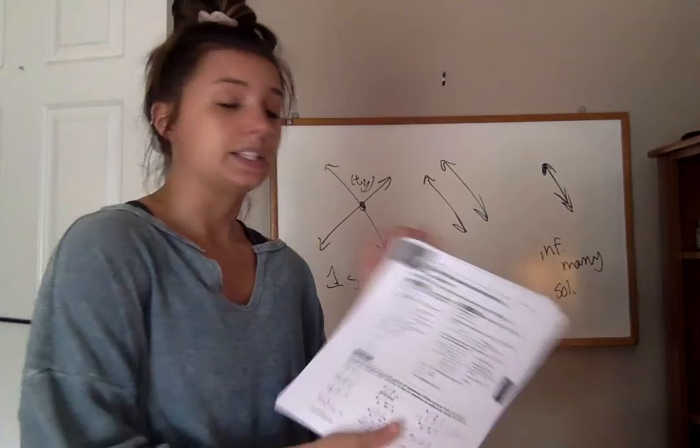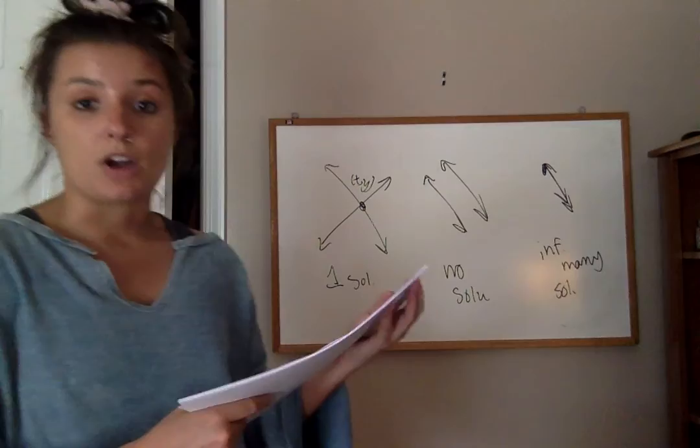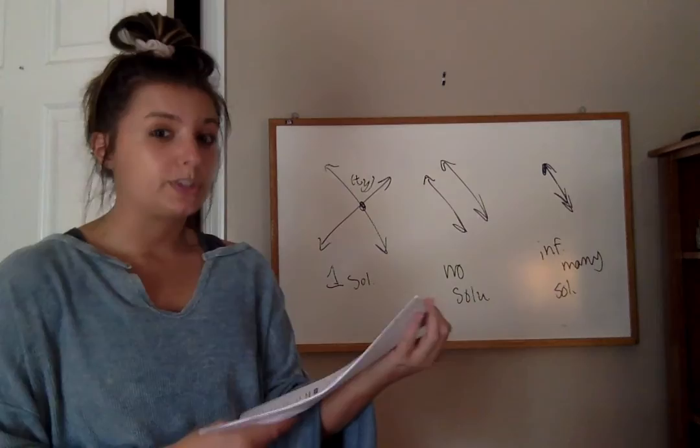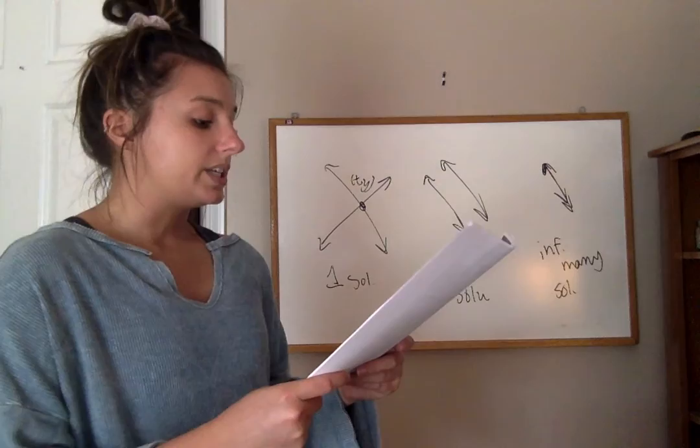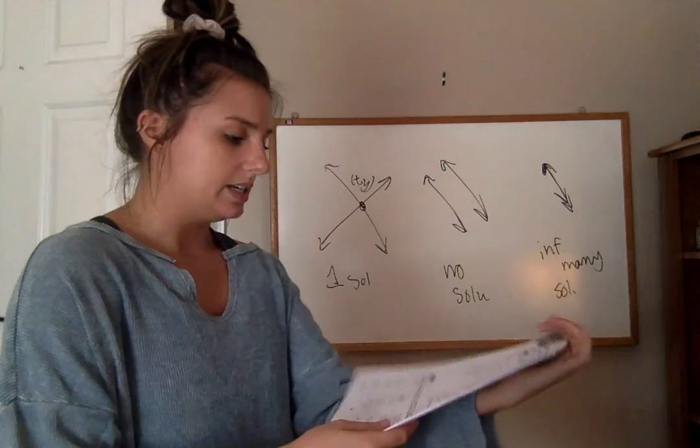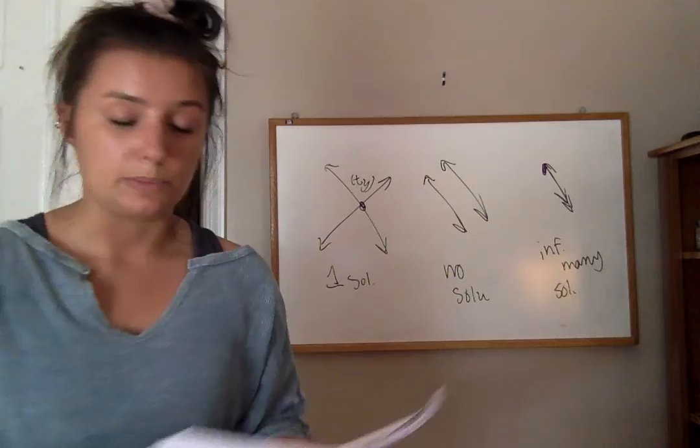Page 409 says substitution at the top. This is where we get into some algebra, but we're still talking about the same concept. Instead of graphing the two lines, we're going to use algebra to figure out where exactly they cross, if they do. We're going to figure out which scenario it is without ever graphing them. It says use substitution to solve each system of equations.